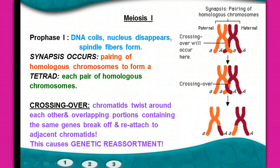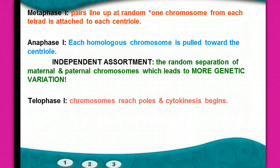Crossing over occurs, and that causes parts of those chromatids to swap positions. When that happens, we have complete genetic reassortment. At the end of meiosis II, as those separate, we get four different kinds of gametes.